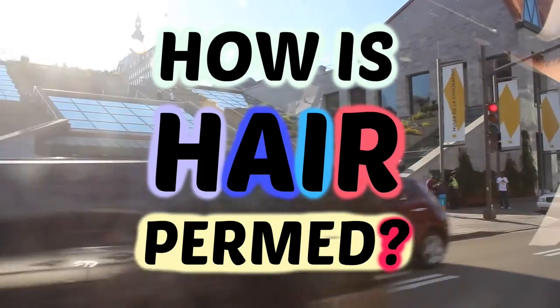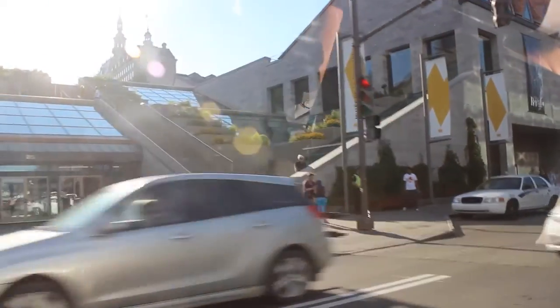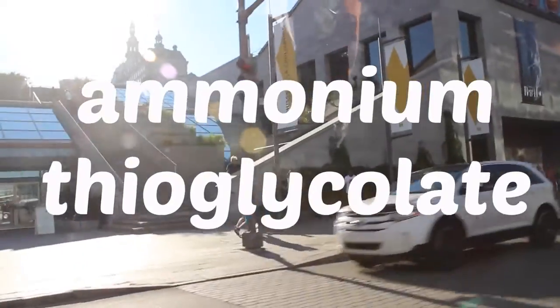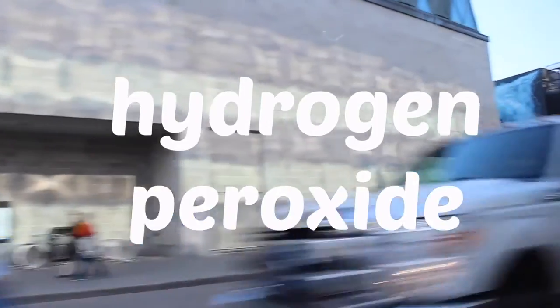How is hair permed? The chemicals used are ammonium thioglycolate and hydrogen peroxide.